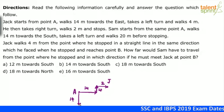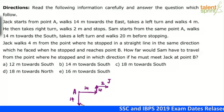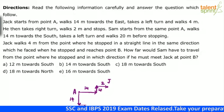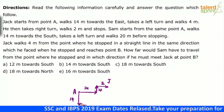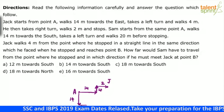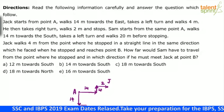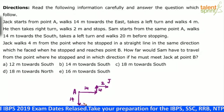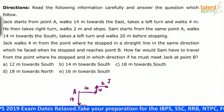Then Sam takes a left turn. Now understand — Sam is facing south. What will be left of a person facing south? It will be towards our right. So if Sam takes a left turn, that means Sam turns towards our right — this will be his left. So he walks 14 meters towards south, takes a left turn and walks 20 meters before stopping.